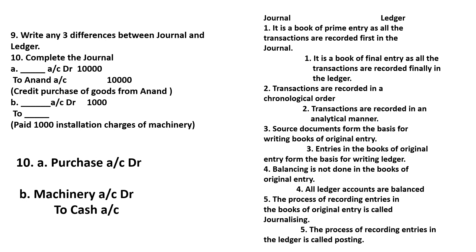Balancing is not done in the book of original entry. The process of recording entries in the ledger is called posting. The process of recording entries in the book of original entries is journalizing.